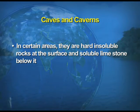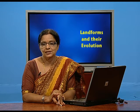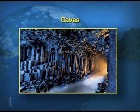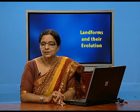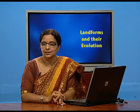Caves are formed by the erosional action of underground water. In certain areas there are hard, insoluble rocks at the surface and soluble limestone below. The underground water dissolves the limestone from below, while the upper hard rock remains intact like a roof. Thus a cave or cavern is formed — the bottom gets eroded but the top harder rock area remains intact.